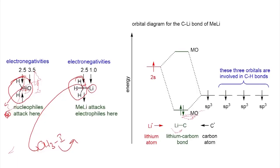As we have seen in the case of the Grignard reagent, this is also an important reagent for carbon-carbon bond formation. The energy level of the carbon-lithium molecular orbital is very close to the sp3 hybridized orbital of carbon. Therefore, the contribution of the sp3 hybridized orbital to bond formation is higher compared to the 2s orbital of lithium. That is the reason the electron density on this carbon is greater, so it acts as a base or nucleophile.